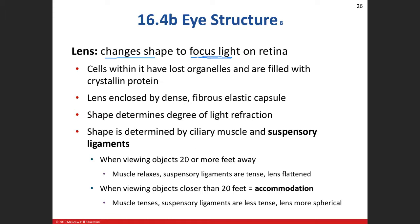The lens is mostly transparent — it once had organelles but they're gone, leaving behind crystalline protein that allows light to transmit through it. On the outer surface is a dense, fibrous, elastic capsule, which is critical because the lens needs to be capable of changing shape. Changing focus from far to near — called accommodation — requires this elastic property.